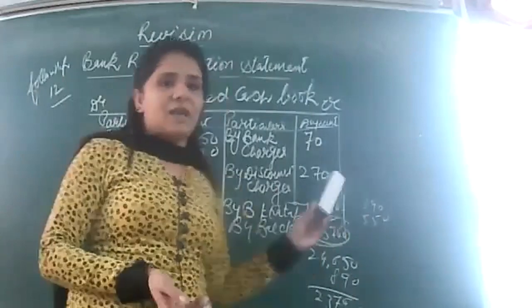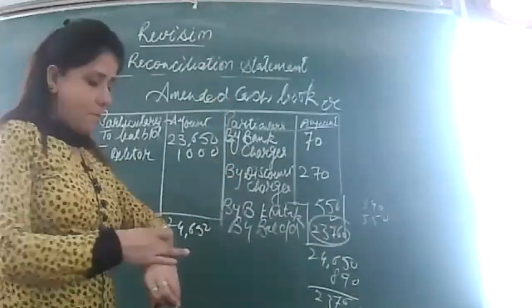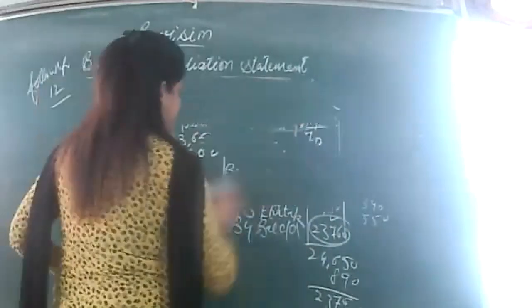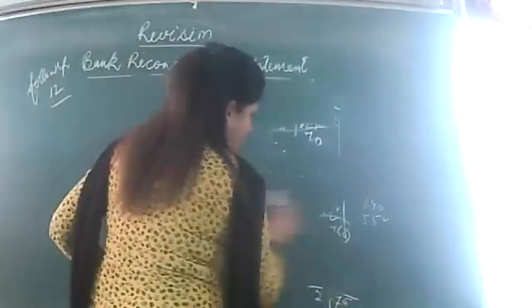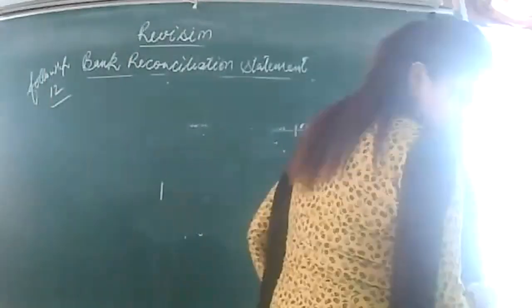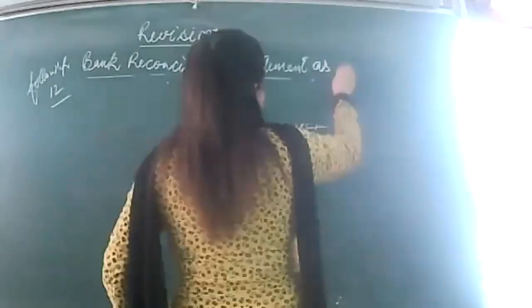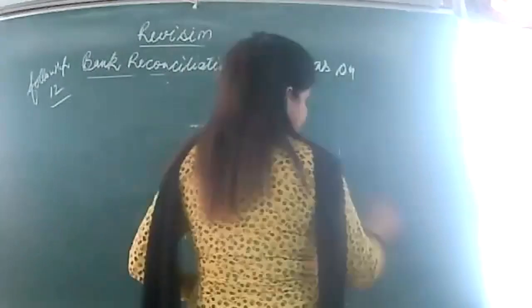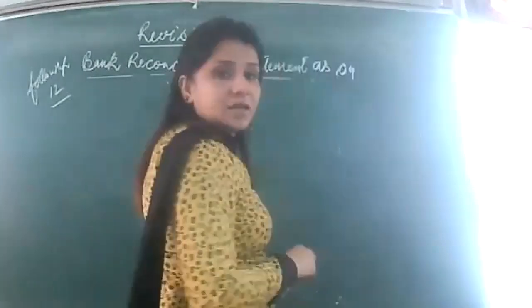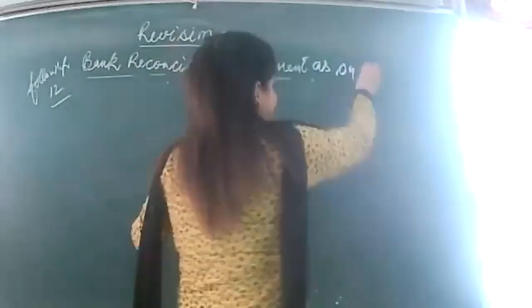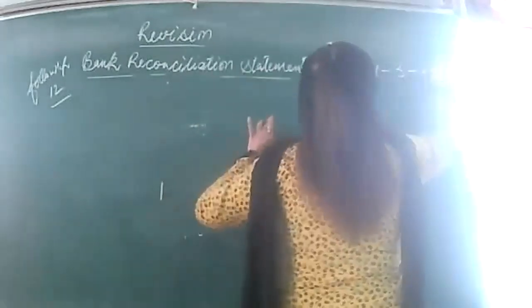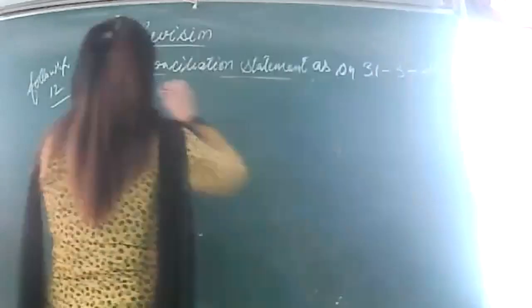Now I have to think as per the passbook balance. Let's begin the Bank Reconciliation Statement for the relevant person as on 31st March 2018. The cash book balance on 31st March 2018 is 23,760. Let's prepare the BRS format.